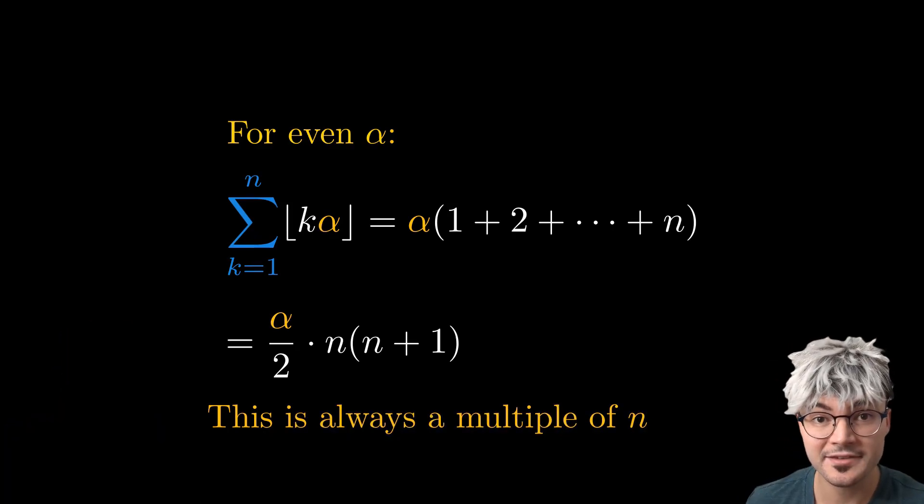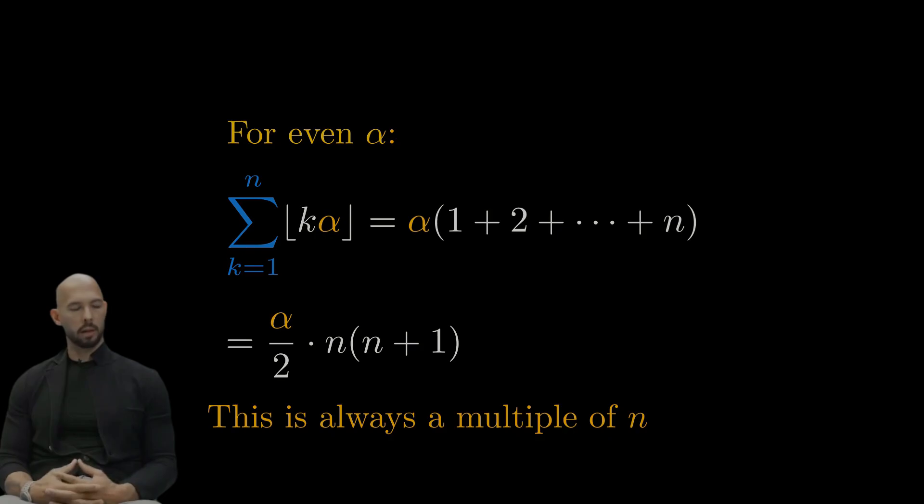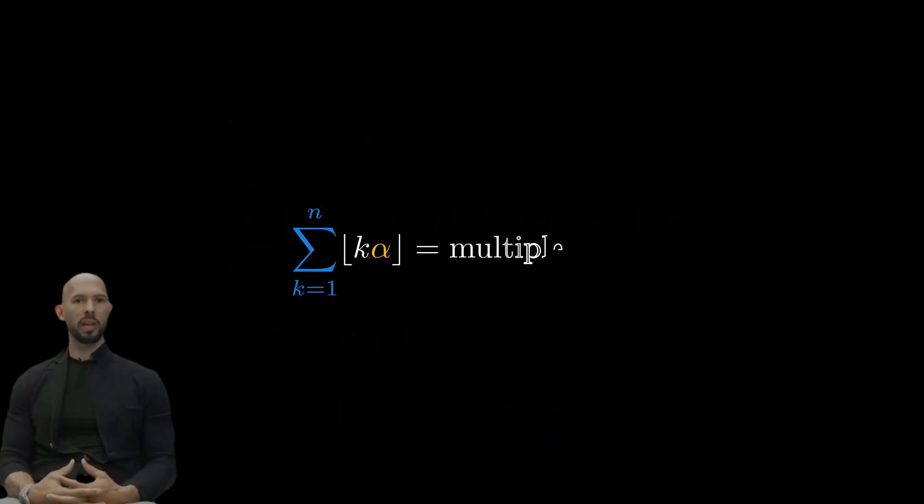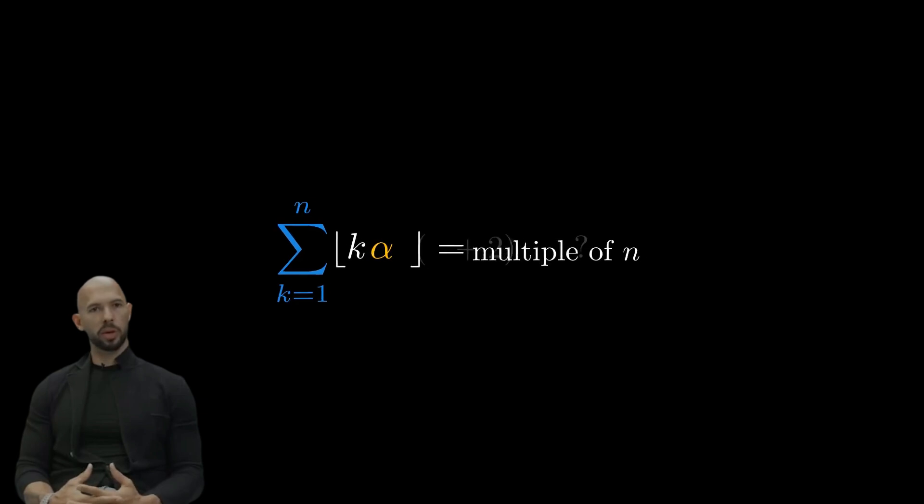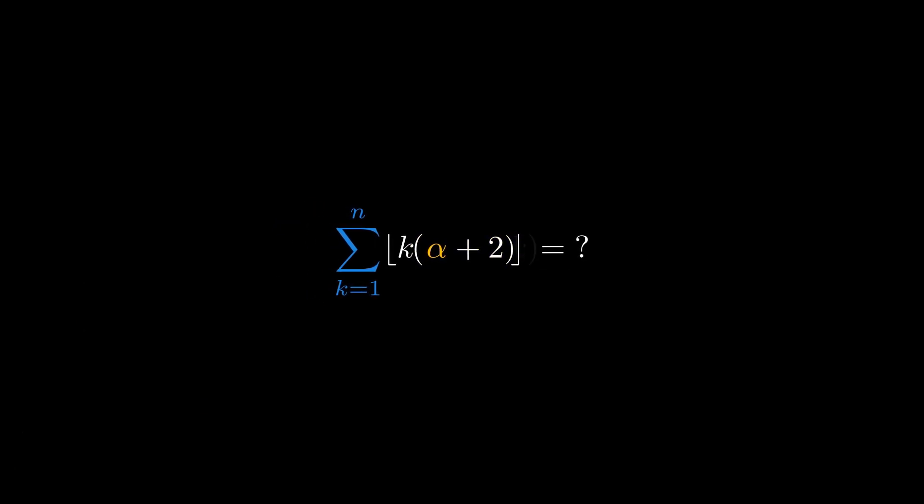Let's investigate the second observation. Let me take it from here, Aladdin. Let's say that alpha answers the question. So our sum is a multiple of n. What would happen if we take alpha plus 2? 2k gets out of the floor function since it's an integer. And then we get our initial sum and the sum of 2k, which once again is a classic.